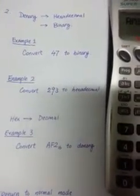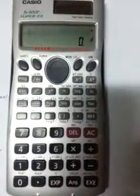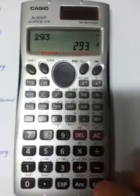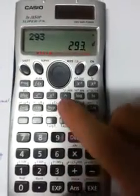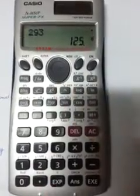So we can go back to denary number again by pressing this button, dec, then 293, exe. And then this time we change to hexadecimal, which means we press hex, this button.